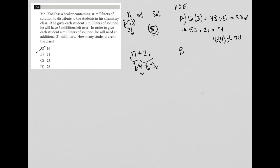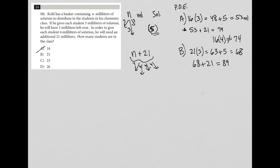Choice B: if I had 21 students who all received three milliliters, that's 63. And again, after giving them all three milliliters, I would have had five left over, so that means I would have started out with 68. I take that 68 and add 21, which takes me up to 89. Those 89 milliliters should evenly distribute to the 21 students if I give them all four. But 21 times four is just 84, not 89. So answer choice B is also not correct.